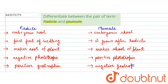In this question we have mentioned the differences between radicle and plumule. Radicle is the embryonic root, it is the first part of the seedling, it makes the root part of the plant, and it is negatively phototropic and positively geotropic. Whereas the plumule is the embryonic shoot, it grows after the radicle, it makes the shoot system, and it is positively phototropic and negatively geotropic.